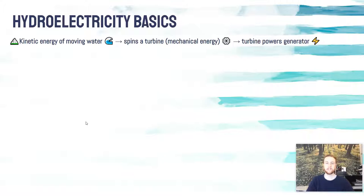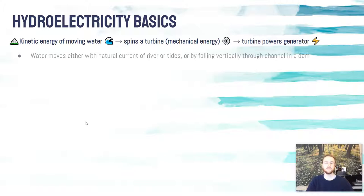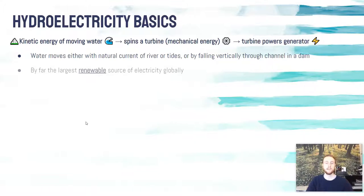That turbine can power a generator, which will generate electricity. This water could be moving with the natural current of a river or the tides of the ocean going in and out, or it could be water that's falling through a channel — an intake channel in a dam. It is by far the largest renewable energy source globally.